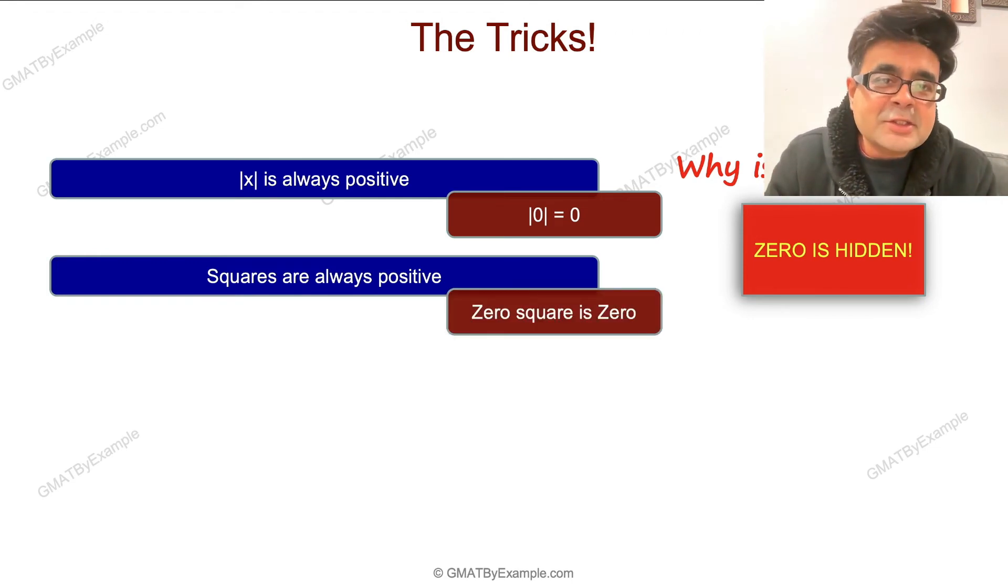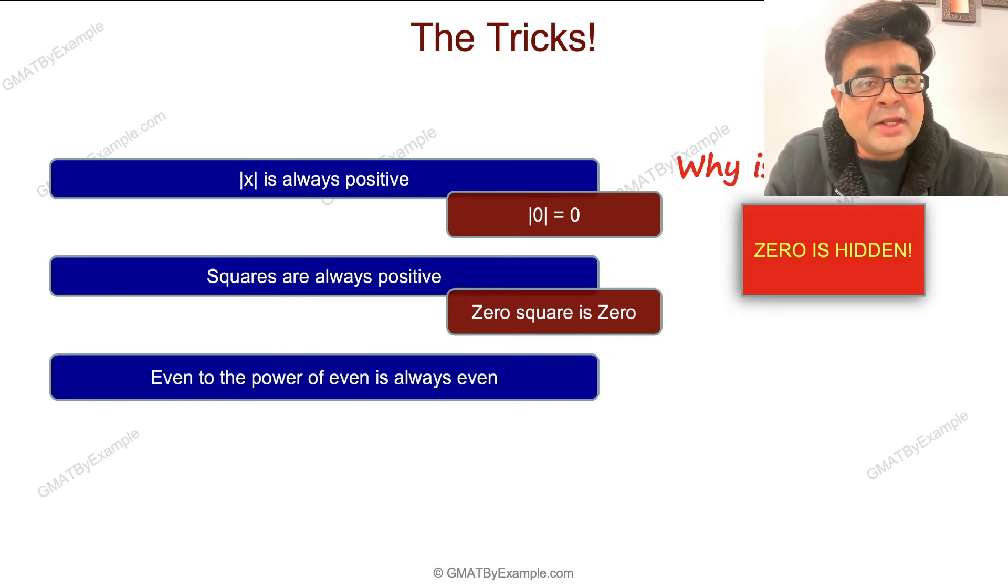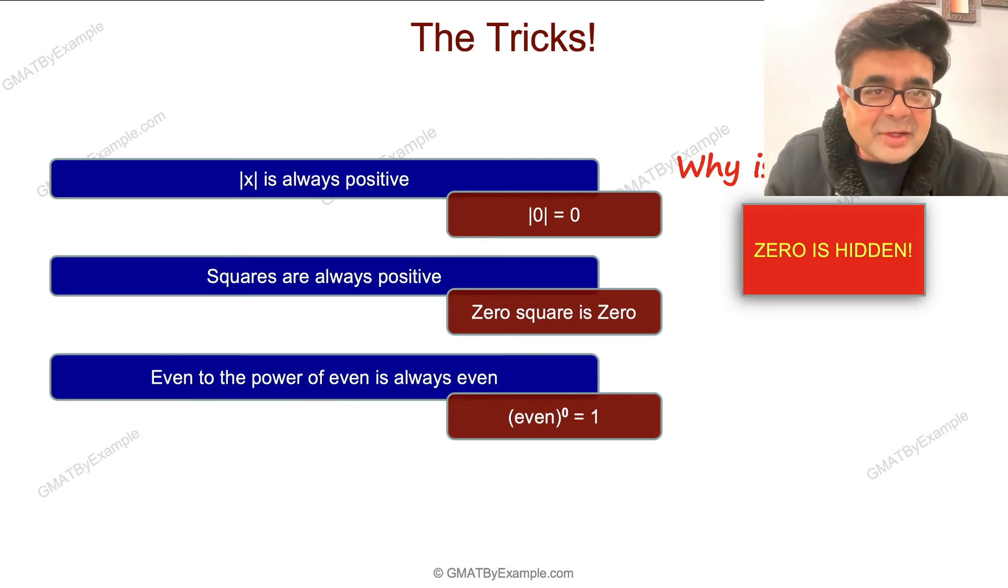Similarly, any even number to the power of an even number will be an even number, you would imagine. However, any even number to the power of zero equals one, which is an odd number. There are so many different tricks with zero, especially hiding zero in examples, that if you do not think about zero very specifically, you will get this wrong.